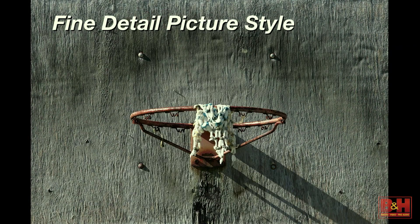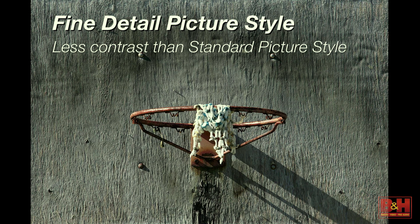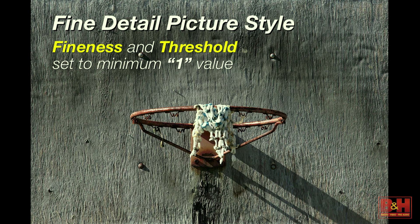It's only when tungsten or tungsten-like light is in the scene that you see the divergence between the two auto white balance settings. All other white balance settings behave the same way. Another addition we saw with the 5DS and 5DSR is a new picture style called Fine Detail, which gives you less contrast than the standard picture style but also adds unsharp mask-like controls.